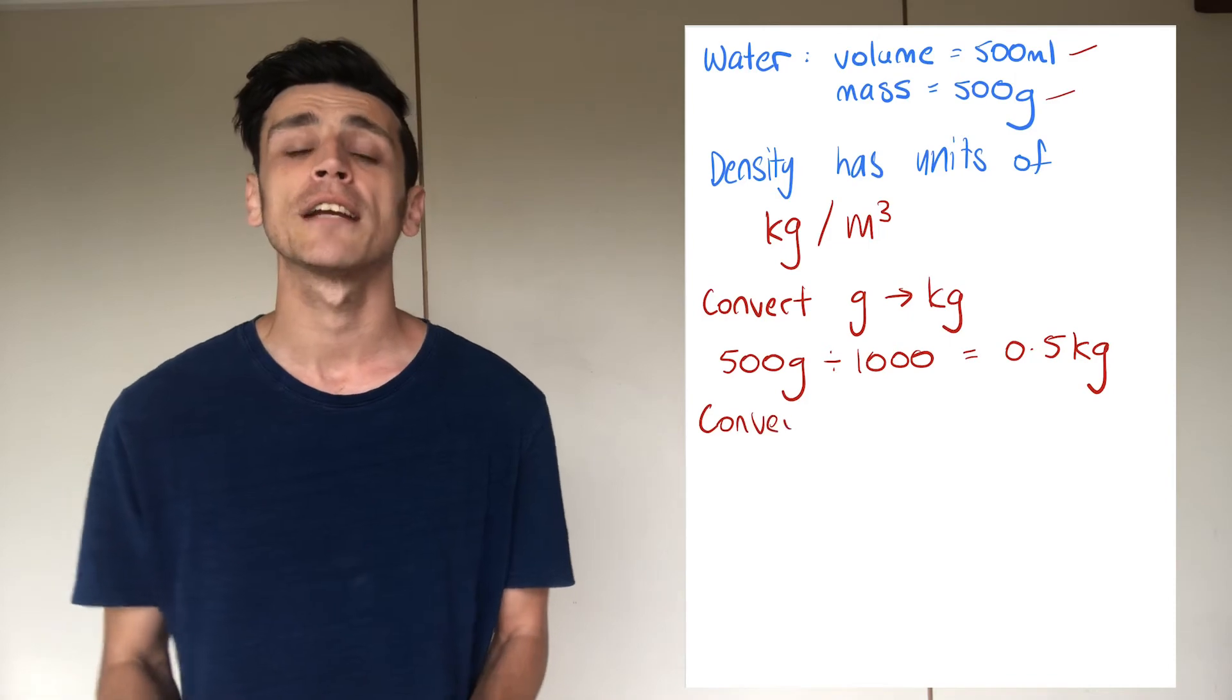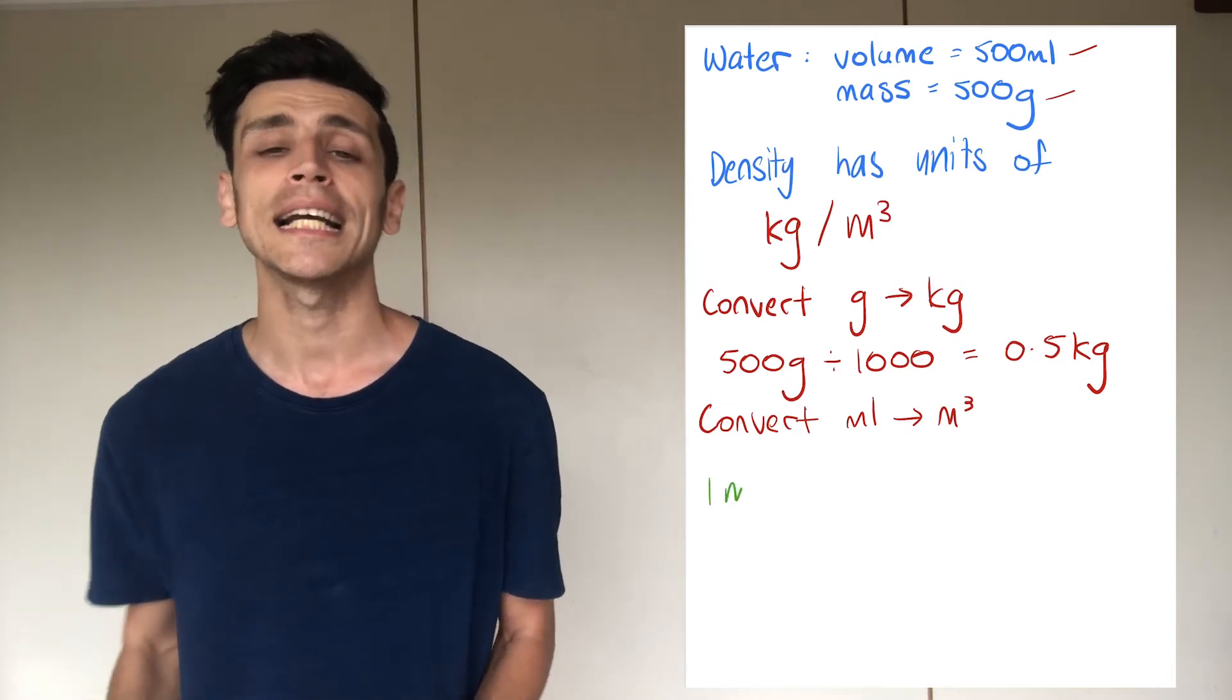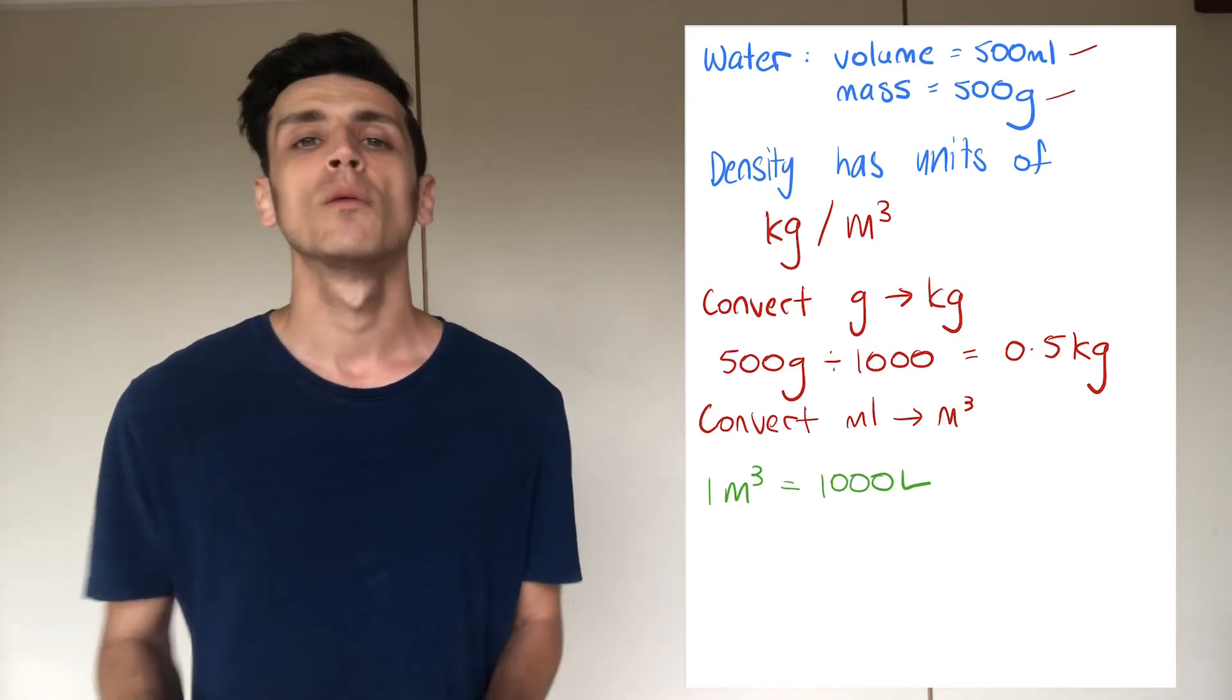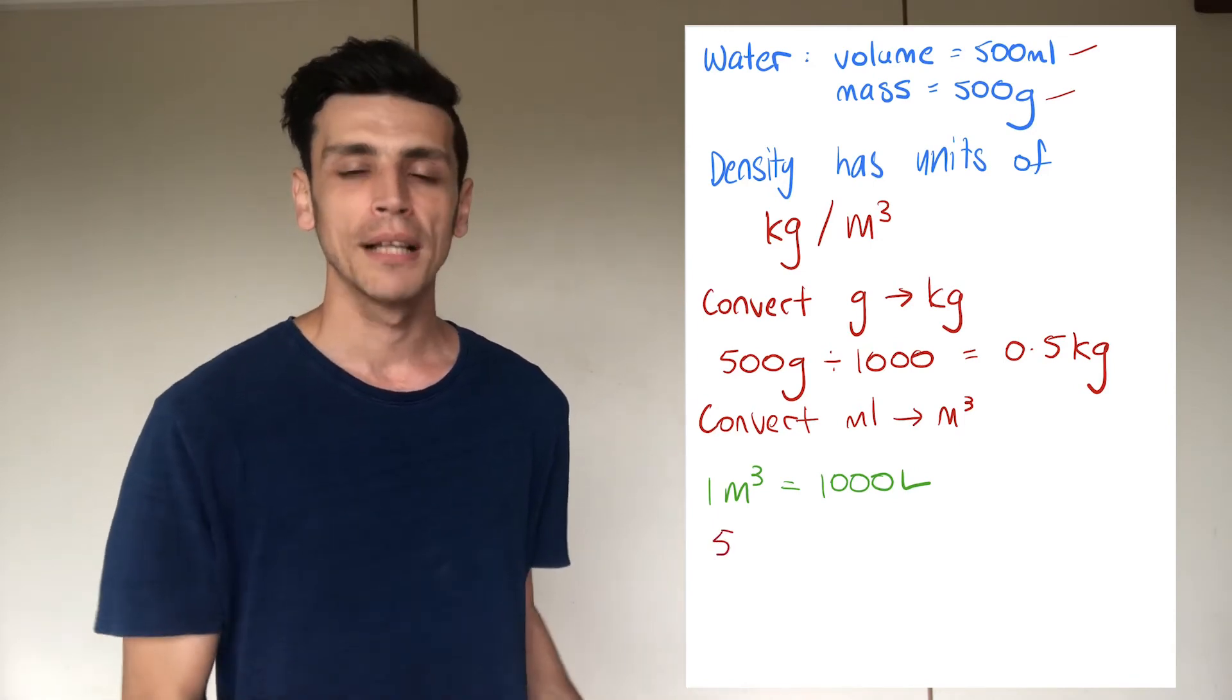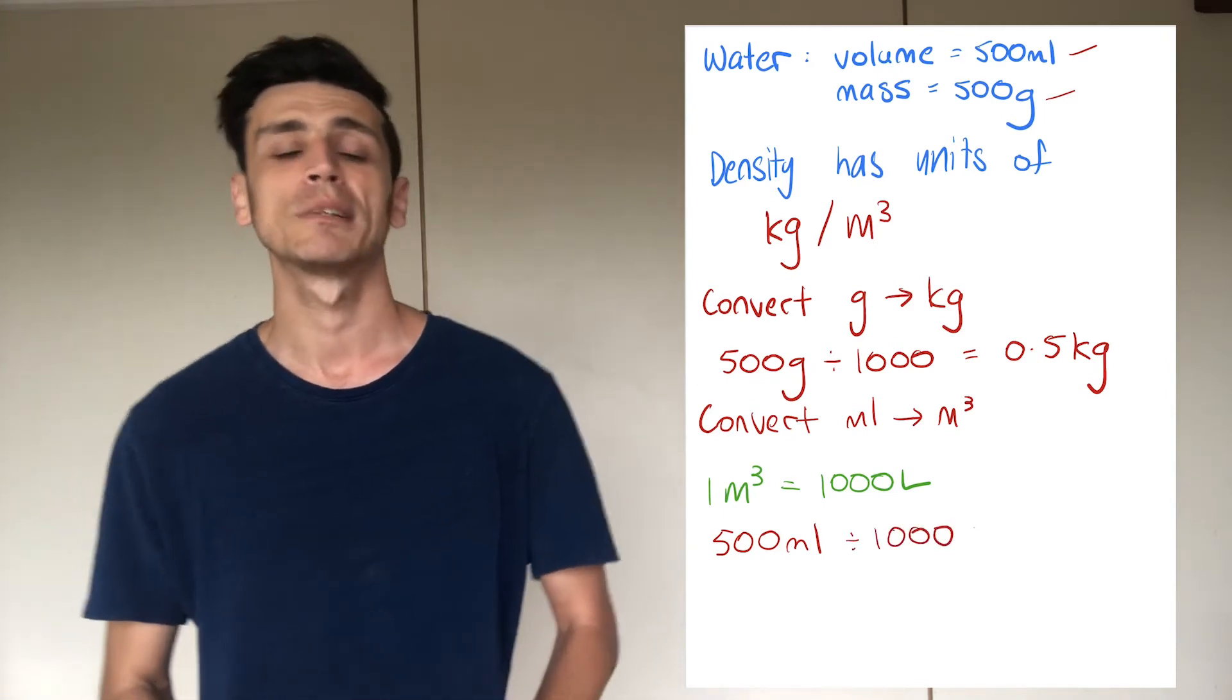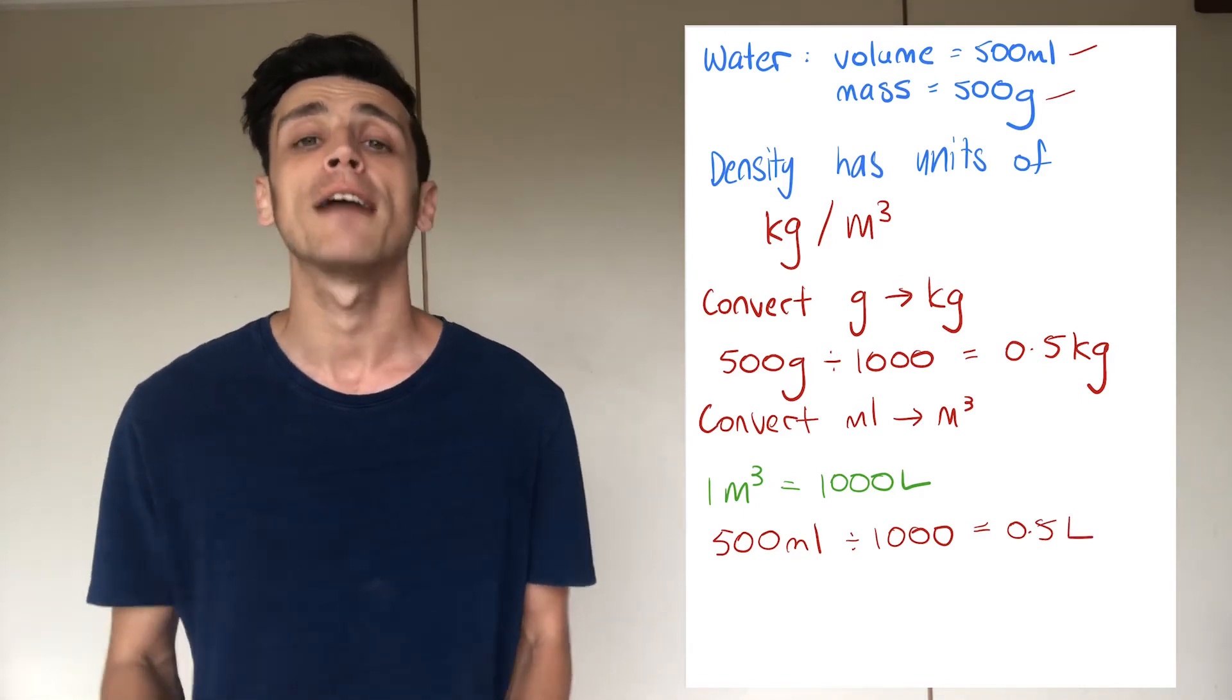Next we're going to have to convert the milliliters into cubic meters and this one's a little bit trickier but just know that one cubic meter is exactly the same as a thousand liters. So keep that in mind. But firstly what we'll do is we'll convert the milliliters into liters. Again there are a thousand milliliters in one liter so if we want to turn milliliters into liters we simply divide by a thousand the same as what we did before. So again it's going to be 500 milliliters divided by a thousand and that's going to give us 0.5 liters.